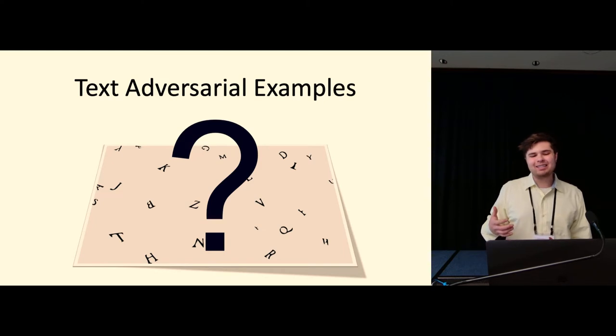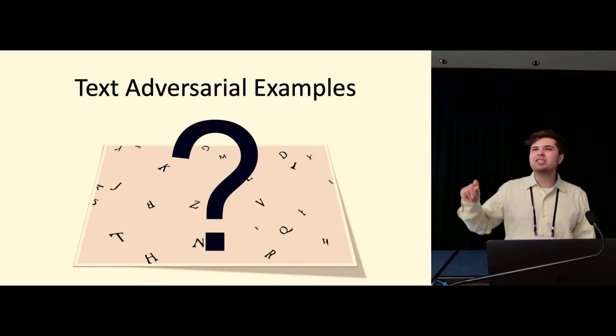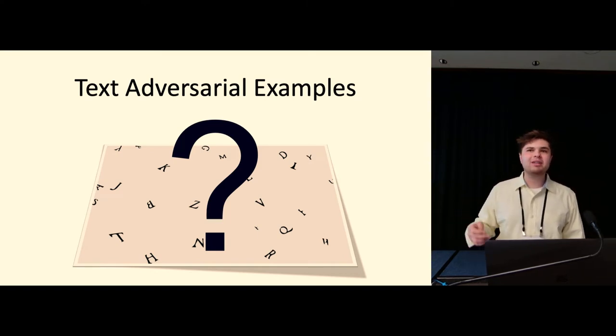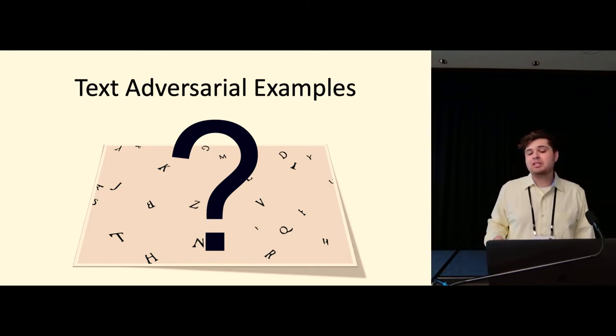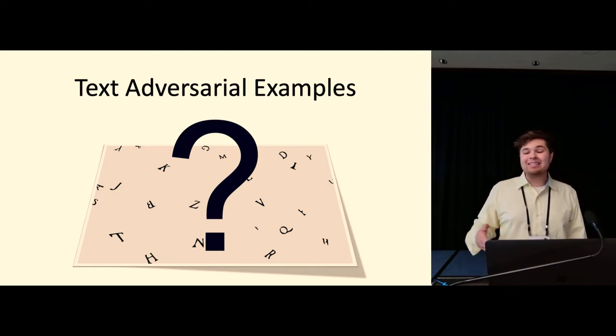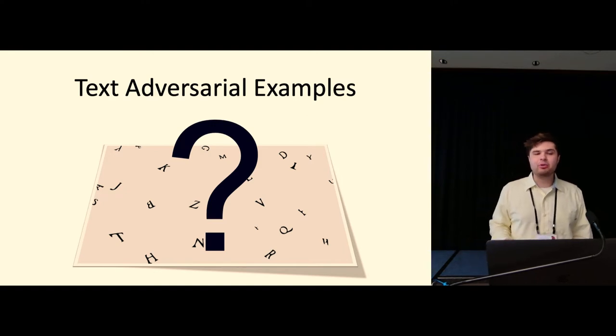But what does it mean to craft adversarial examples in the text domain? Text is a very discrete form of communication. It's information that tends to change drastically if you change anything about it. You can't subtly tweak the color value, a color channel value of something in text. You have to entirely change a letter or change a word or a sentence structure or something like that. And when it comes to machine learning in general, NLP is a very successful application of machine learning. So a reasonable question to ask would be, is it exempt from these sort of adversarial example attacks? Well, the answer to that is absolutely no.